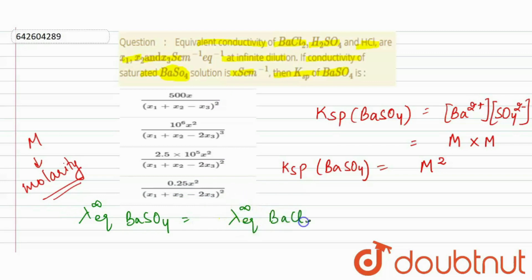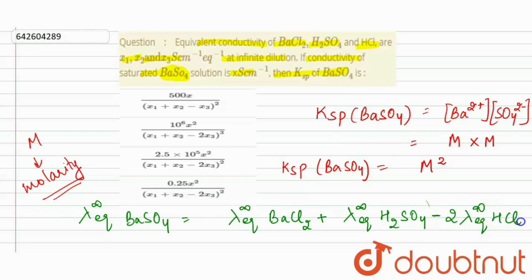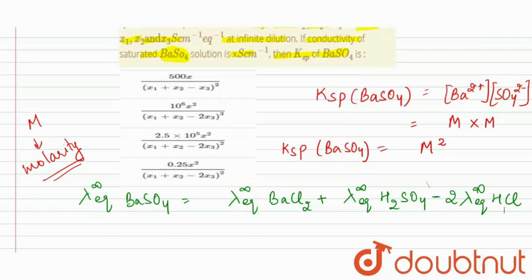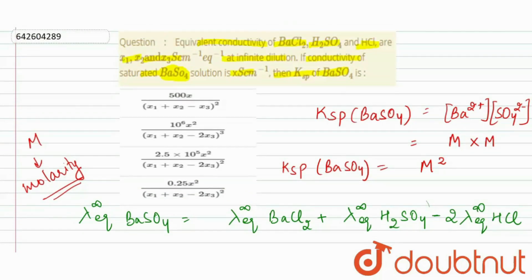The equivalent conductivity at infinite dilution for BaSO₄ equals: λ∞(BaCl₂) plus λ∞(H₂SO₄) minus two times λ∞(HCl), because we need to cancel out the two H⁺ and two Cl⁻ ions. We only require Ba and SO₄. So for BaCl₂ it is x1, for H₂SO₄ it is x2, and for HCl it is x3.